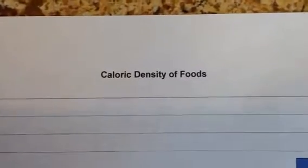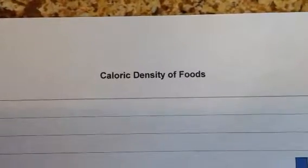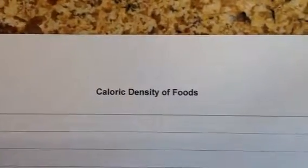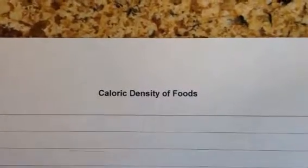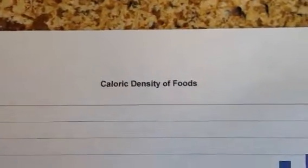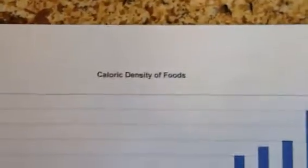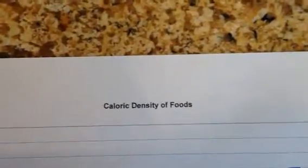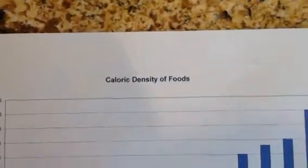I want to talk to you all today about the caloric density of food. One of the reasons that we have 70% of our nation overweight and almost 30% actually obese is because of the caloric density of the foods that we eat. Most of these are processed foods. Here you'll see a chart that has across the bottom the various different types of foods, and across the y-axis is the caloric density — the calories per pound.